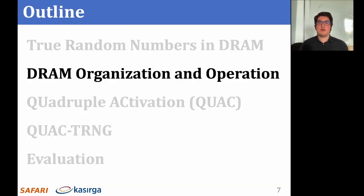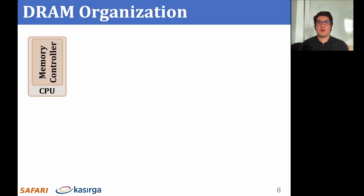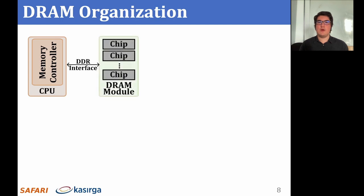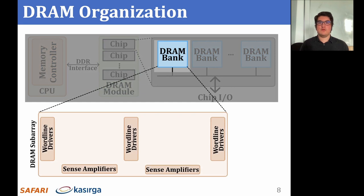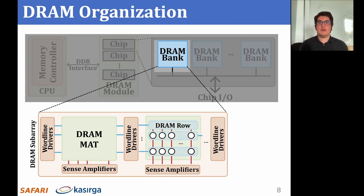I'll go over the relevant background on DRAM organization and operation in the next few slides. A processor's memory controller communicates with a set of DRAM chips within a DRAM module through a memory channel. Each DRAM chip contains multiple banks that share a common chip I/O interface. DRAM banks are organized into subarrays that consist of a set of wordline drivers and sense amplifiers. Subarrays are partitioned into DRAM mats, which are collections of DRAM cells separated from each other by wordline drivers. DRAM cells are laid out onto a two-dimensional array of wordlines and bitlines within a DRAM mat. A row of DRAM cells is referred to as a DRAM row.